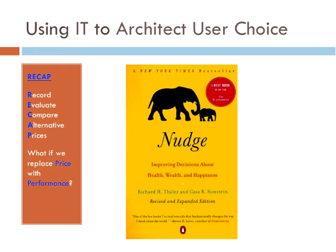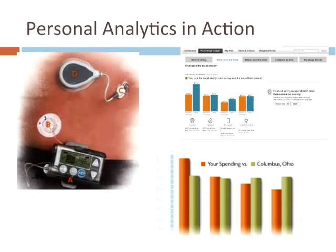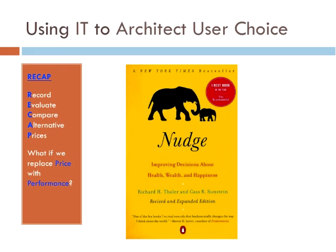One of this week's readings referenced the work of Thaler and Sunstein. They talk about something called RECAP — record what users do, let them evaluate it, and most importantly let them compare with what peers might be doing and look at alternative prices. The idea is you let people run their own data through a comparison — like mint.com or O-Power — and if they're given better choice tools, they will make better choices. That's the whole point of nudge: choice architecture.